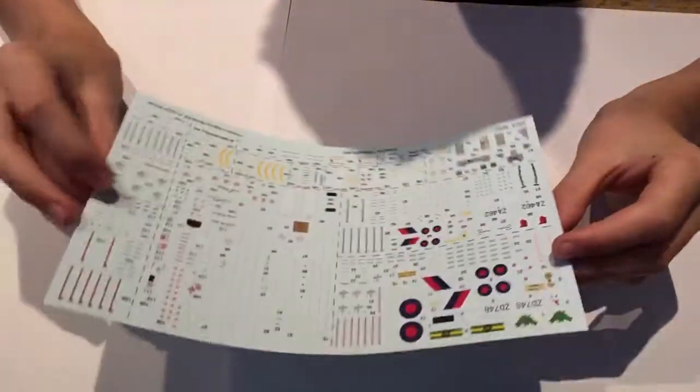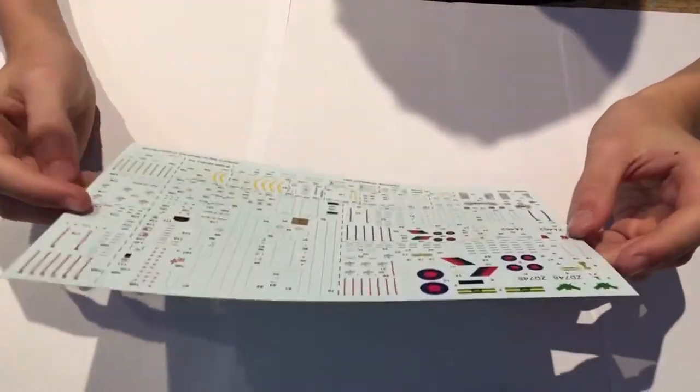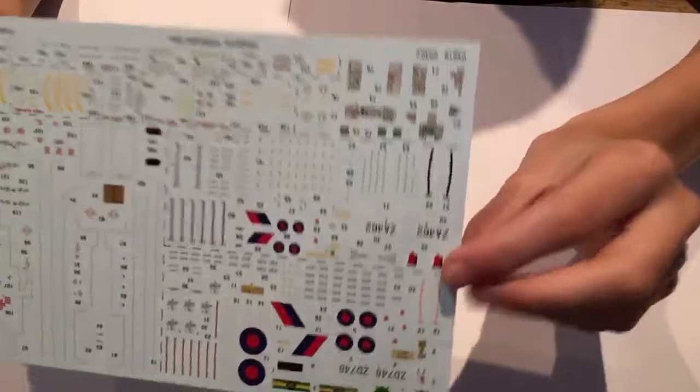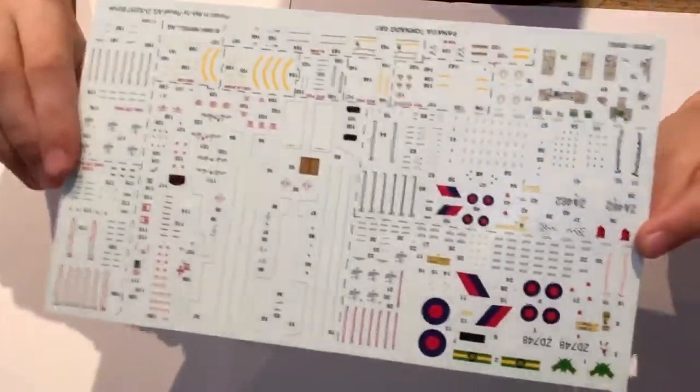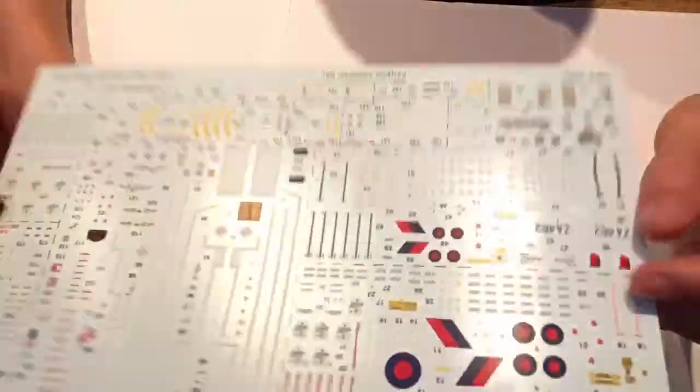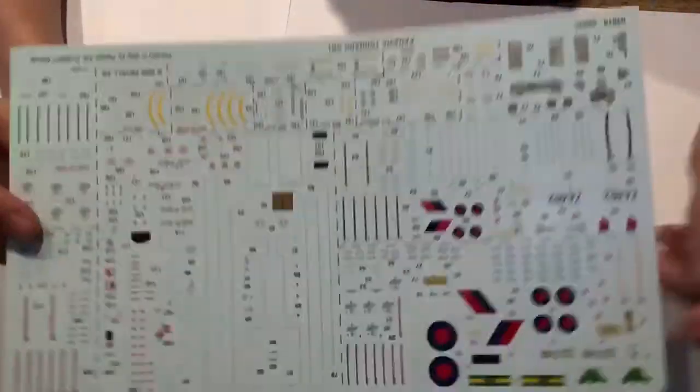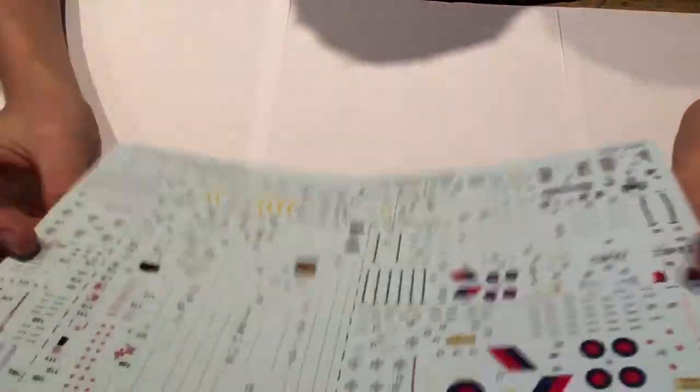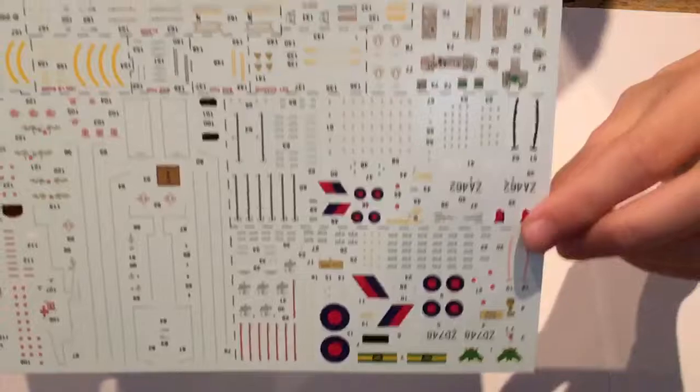Let me remove the instructions for a minute. I'll show you the decals, which is just an insane number for 1:72 scale. It's lovely to see that Revel is putting intricate detail into their new model kits. Here you have a lovely amount of decals for this kit.